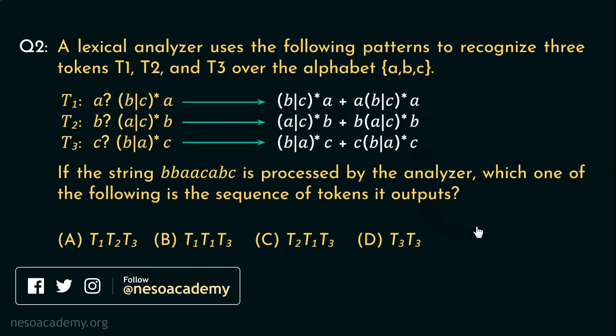Now, what we will do? We will observe which one of these token sequences can represent this string B, B, A, A, C, A, B, C. Thereafter, we will deal with the later part. Let's consider option A, T1, T2, T3.